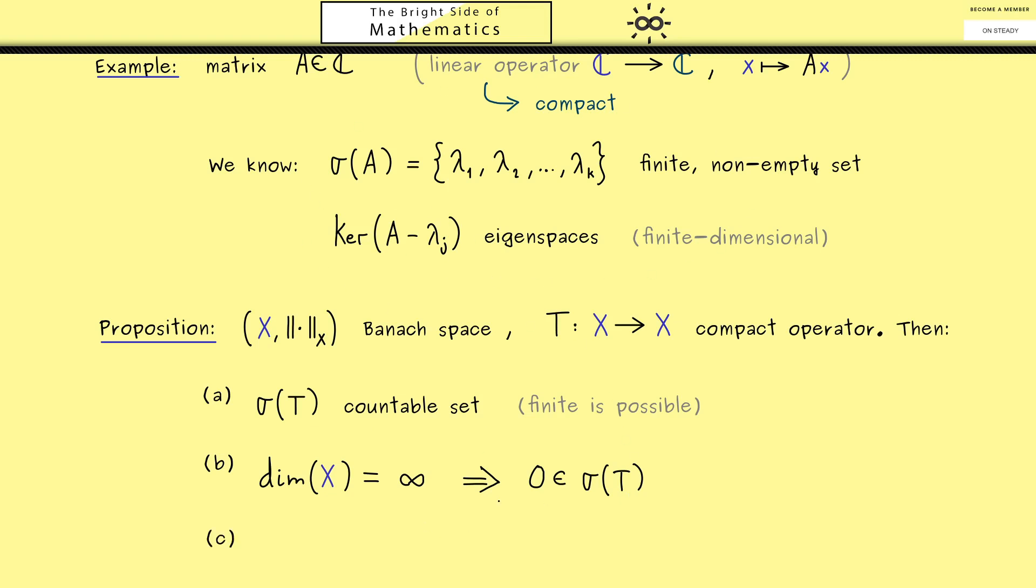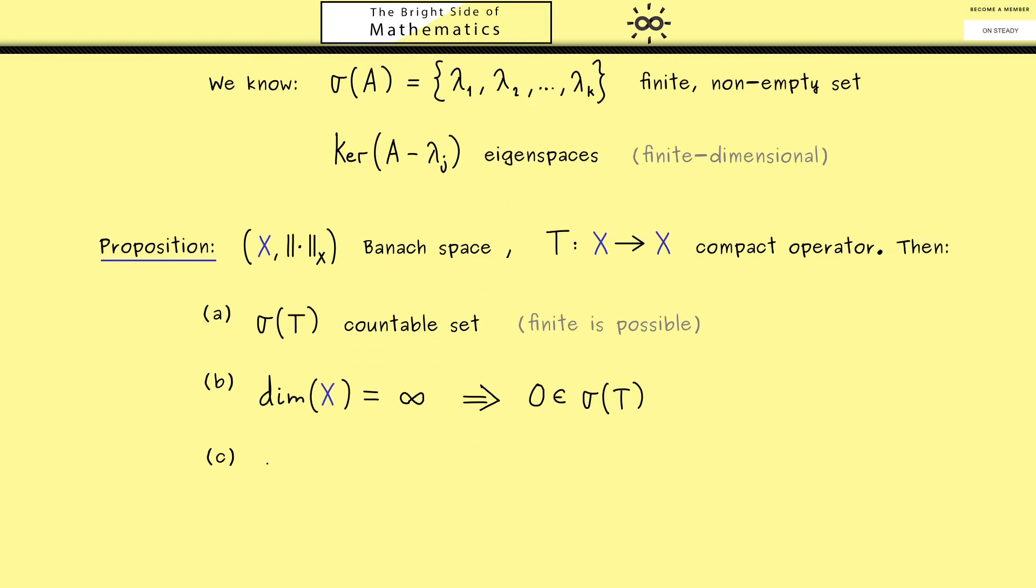Therefore the natural question is what can we say about the spectrum of T without 0. Now of course this is still a countable set but now this one could be empty. However it could also be a countable infinite set which means it could be written as a sequence of values lambda.